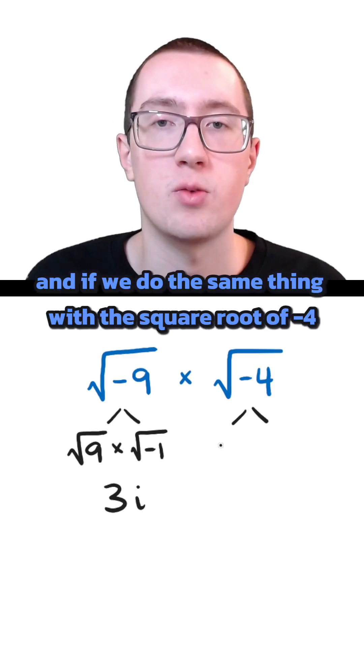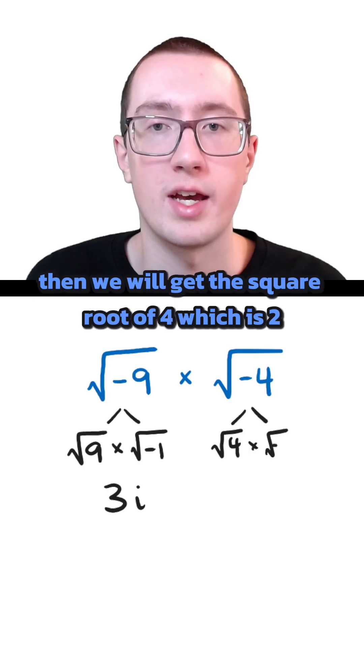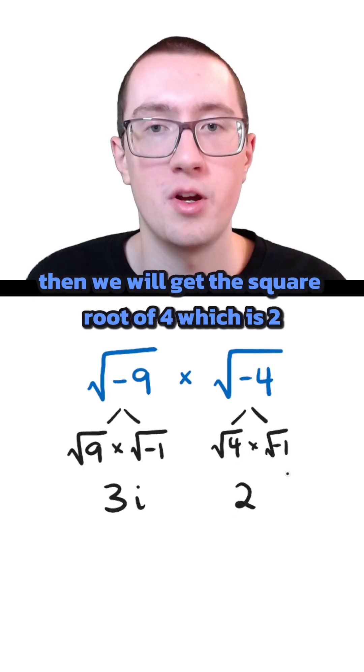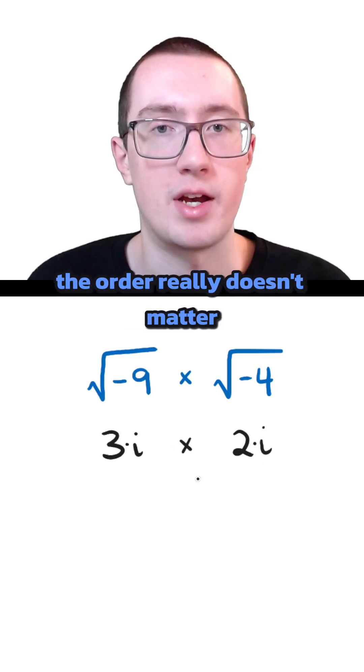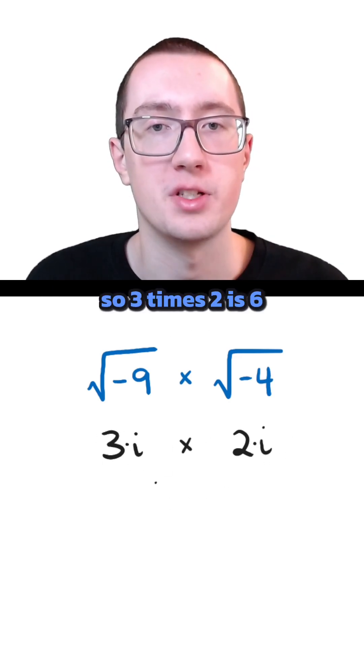And if we do the same thing with the square root of negative 4, then we will get the square root of 4, which is 2, and then i again. Because these are already multiplication, the order really doesn't matter. So 3 times 2 is 6.